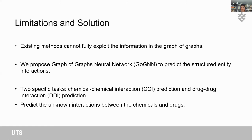The first kind of methods only uses local structure information, including MRGN and MRRDA. The second kind only uses global interaction information, such as Decagon, which ignores the local chemical structure. DeepCCI and DeepDDI do not even consider graph structure information. Existing methods cannot fully exploit the graph-of-graphs structure, so we propose GeoGNN to predict Structured Entity Interactions. We focus on two specific tasks: chemical-chemical interaction (CCI) prediction and drug-drug interaction (DDI) prediction.